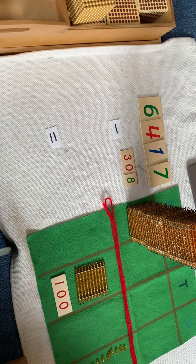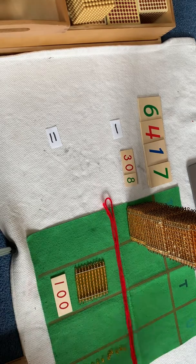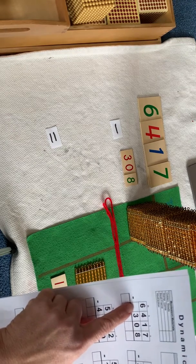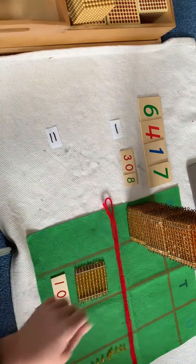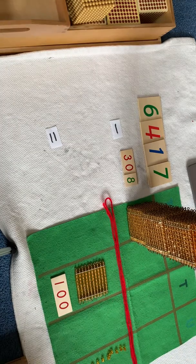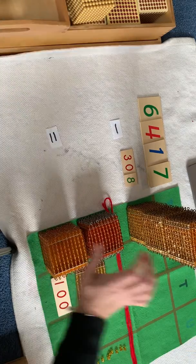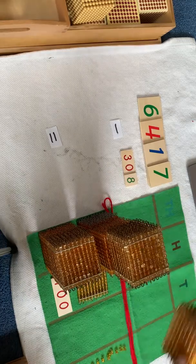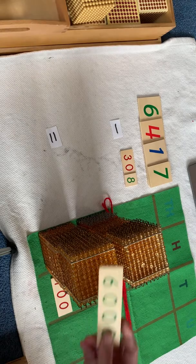Now, in this problem, I notice that there's nothing there in the thousands place. That just means it's a zero. We don't even have to write it in, but that just means there's a zero there. So we're going to take zero thousands away. Here's my zero thousands. Let's find out how many are left. One, two thousands, three thousands, four thousands, five thousands, six thousands. We have six thousands remaining.